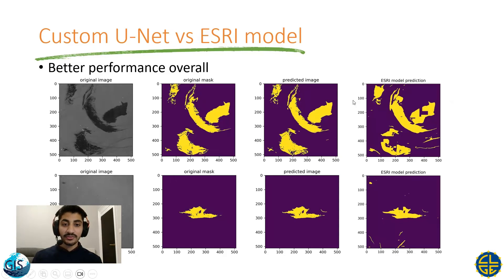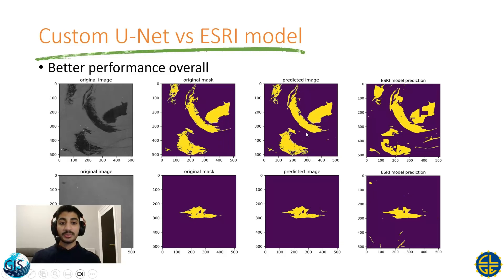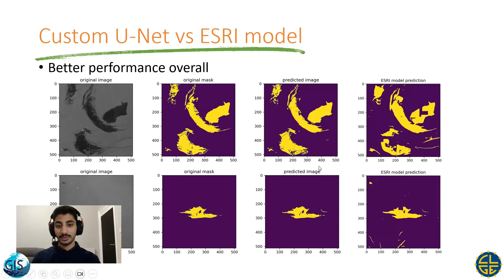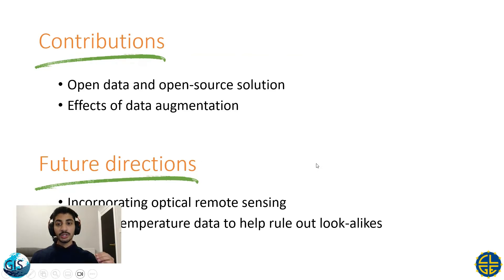If we focus on the final two columns to the right, we can see that my model made predictions that are much closer to the original image compared to ESRI's model. That means that my model had better performance than ESRI's oil spill detection model.